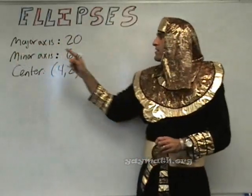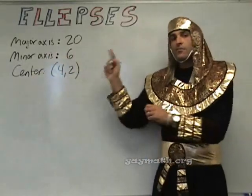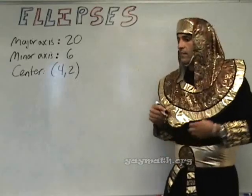Gives us the major axis 20, the minor axis 6, and the center (4,2). Let's graph it, and let's get the equation, and let's get the foci. Alright, those are the goals.